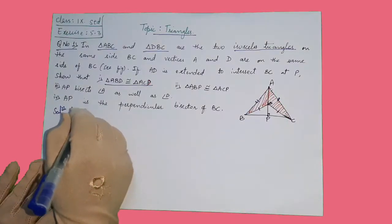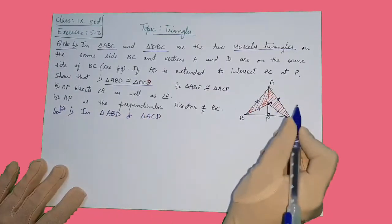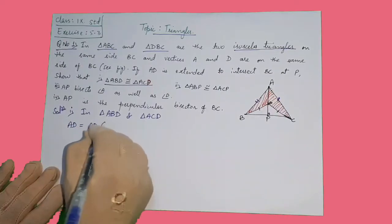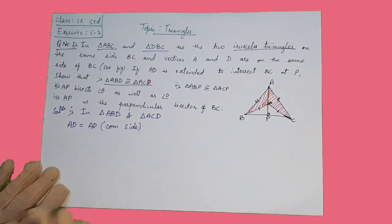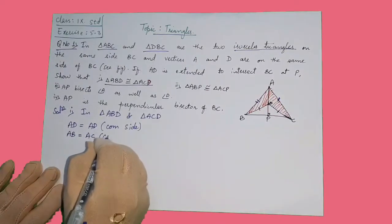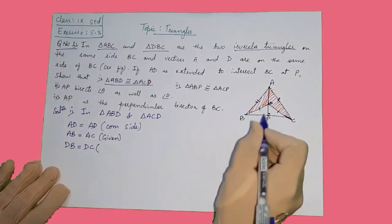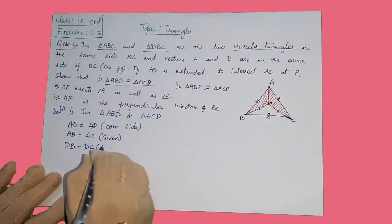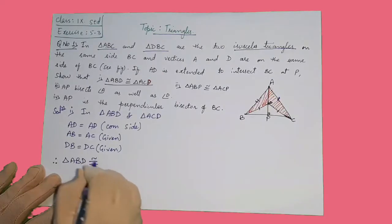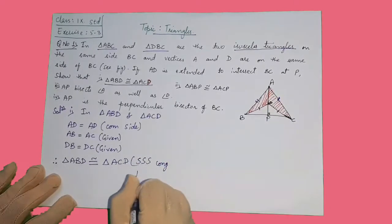In triangle ABD and triangle ACD: AD is equal to AD, because it is the common side used in both triangles. AB is equal to AC, as given since ABC is an isosceles triangle, meaning two sides are equal. DB is equal to DC, also given. Therefore triangle ABD is congruent to triangle ACD by the SSS congruence rule, as all three sides are equal to the corresponding three sides of the other triangle.